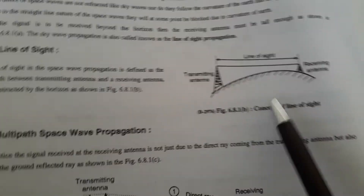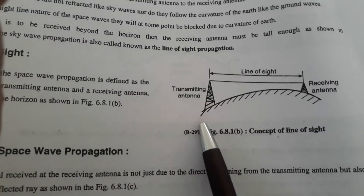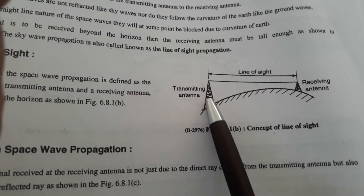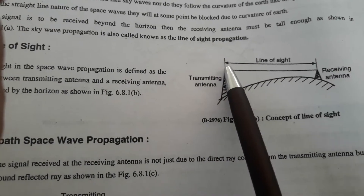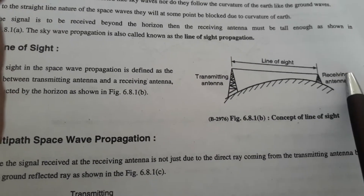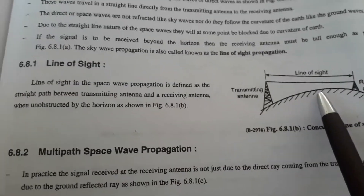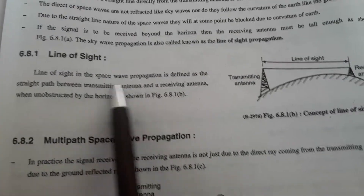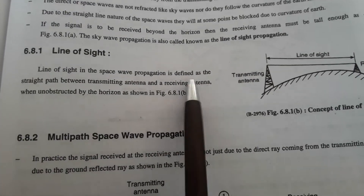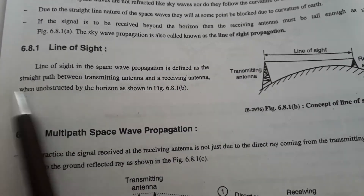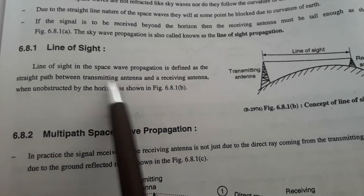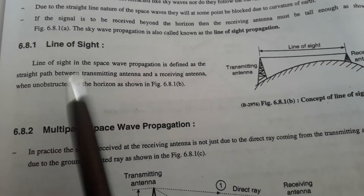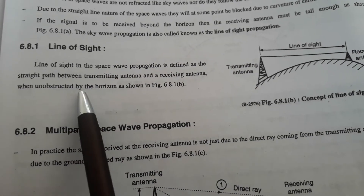Here you are once again observing a line of sight propagation. This is the earth's surface, this is the transmitting antenna, and this is the receiving antenna. Through a straight line, we are sending the signal with no reflection. The line of sight in space wave propagation is defined as the straight path between the transmitting antenna and the receiving antenna.